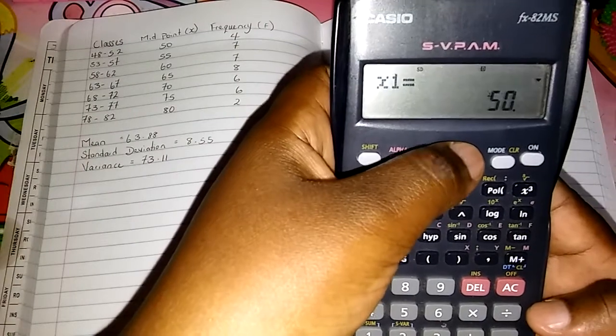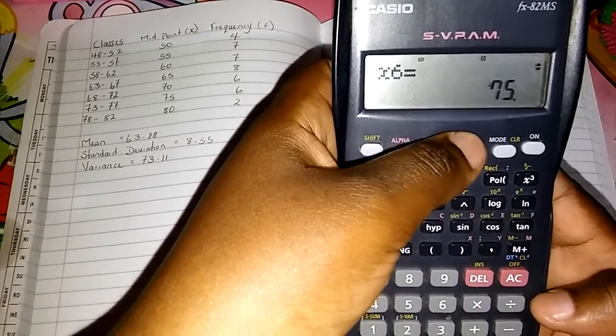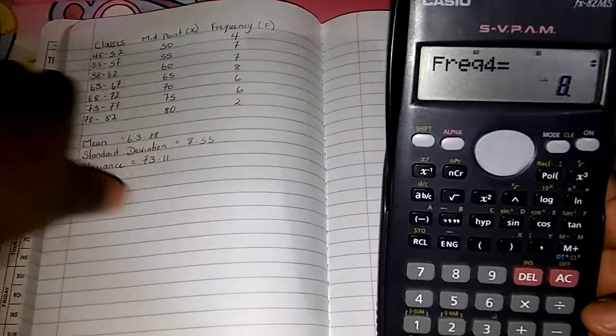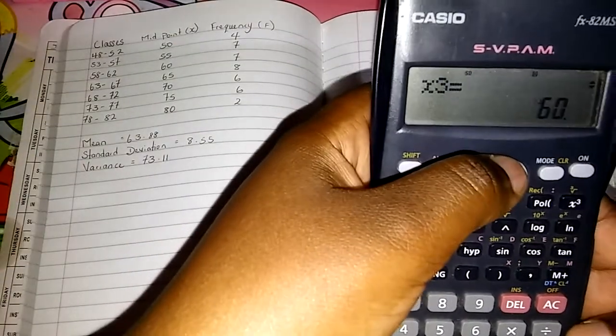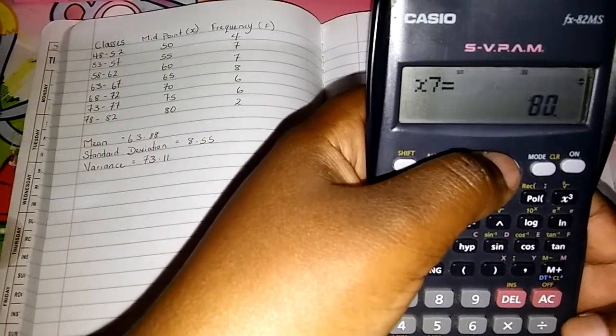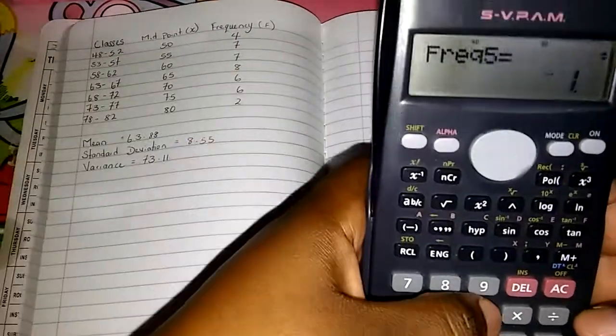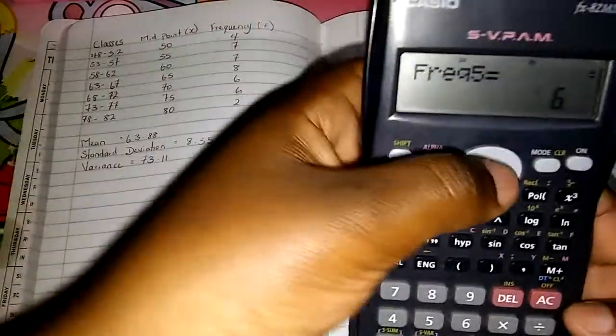We're going to find 4, and for the fourth one it is 8, equal. For the fourth one it's 8, correct. Then we're going to find 5. Then for the fifth one it is 6, equal. For the fifth number is 6, correct.